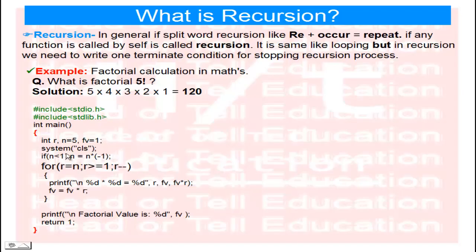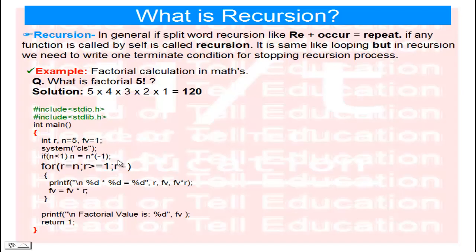For the for-loop: I initialize 'r' equals 'n', so r starts at 5. The condition is r greater than or equal to 1, so 5 is greater than or equal to 1 — true. Then r-- means r decreases: 5 minus 1 is 4, 4 minus 1 is 3, 3 minus 1 is 2, 2 minus 1 is 1, and 1 minus 1 is 0. When r equals 0, the loop terminates. Otherwise, we calculate the factorial value: fv equals fv multiplied by r.